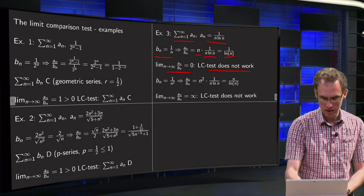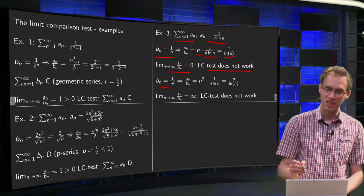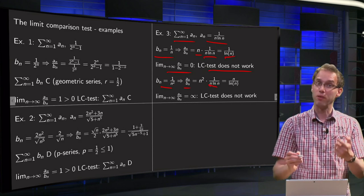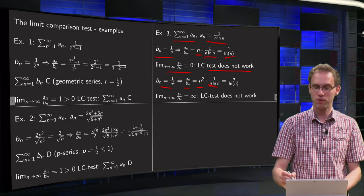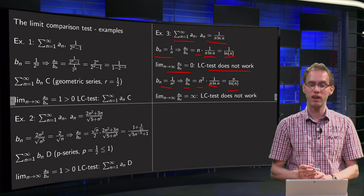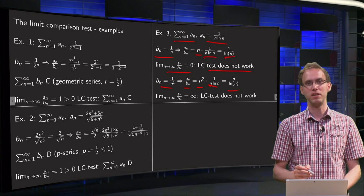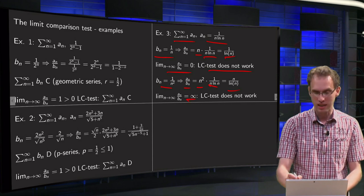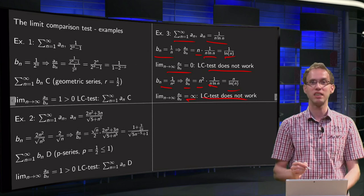Well, let's try another bn, 1 over n squared. Now we take an over bn, again, here's the an, and we divide by 1 over n squared, so we multiply by n squared, taking the limit of n over ln of n. Hey, that's a pity. Using L'Hôpital or whatever, you will see that it tends to infinity, and again, limit comparison test does not work.